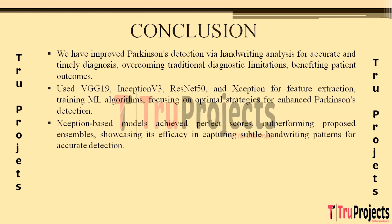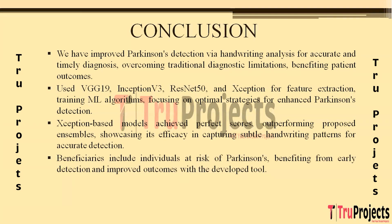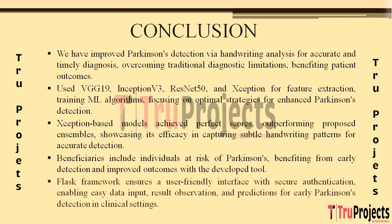The Exception-based models across KNN, Improved KNN, Random Forest, SVM, Decision Tree, and Voting Classifier achieved perfect scores across all metrics compared to the proposed ensemble model. The exceptional performance of Exception highlights its efficacy in capturing subtle patterns within handwriting data for accurate Parkinson's detection. The primary beneficiaries are individuals at risk of or exhibiting early signs of Parkinson's disease. The Flask framework ensures a user-friendly front-end with secure user authentication via SQLite. The practical interface supports easy data input, result observation, and predictions, making the tool valuable for early Parkinson's detection in clinical settings.